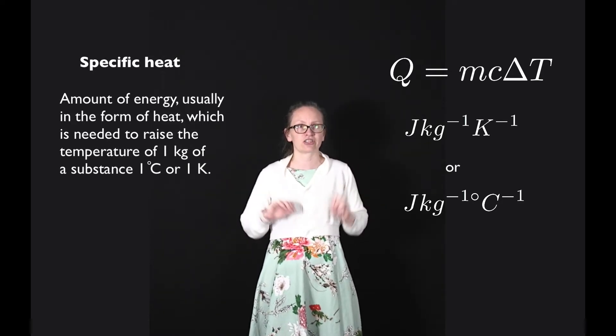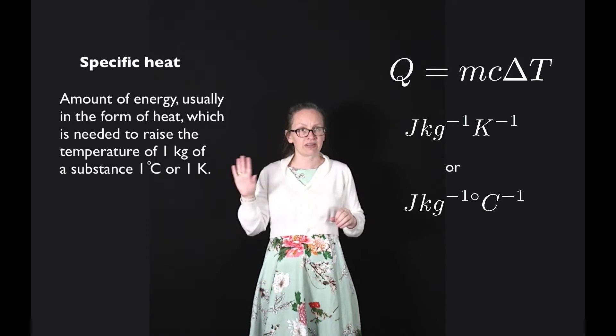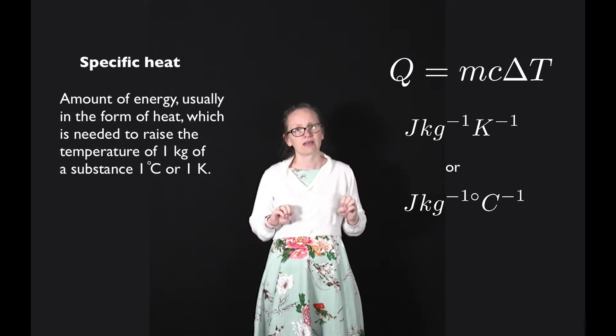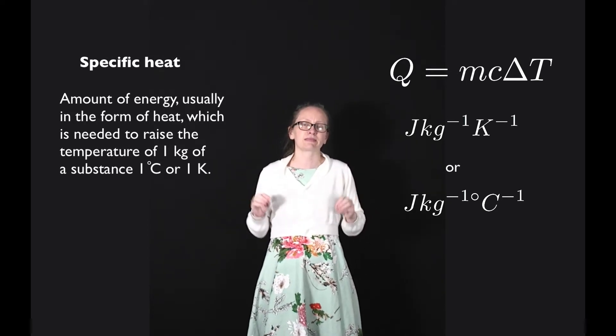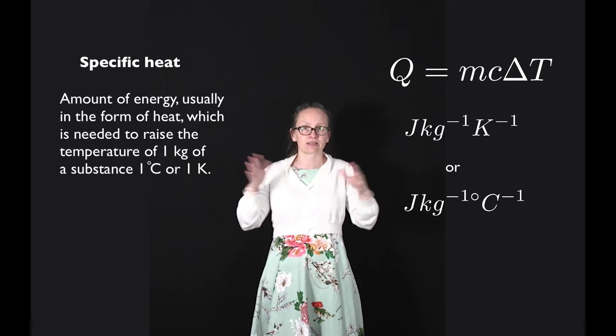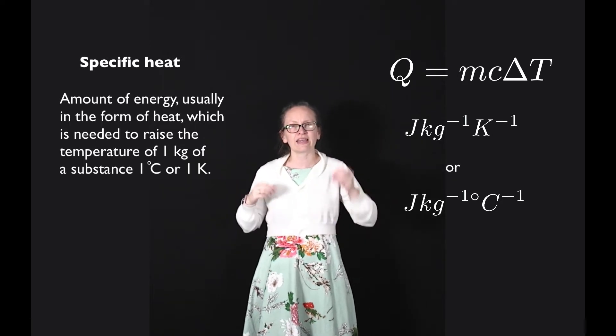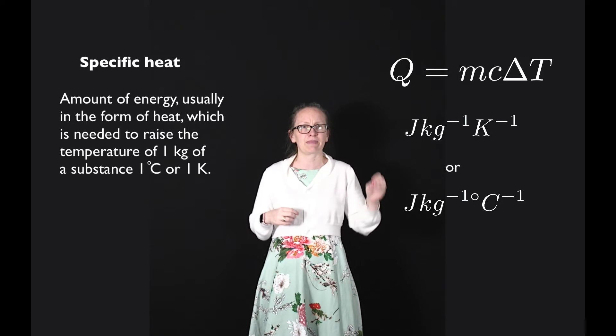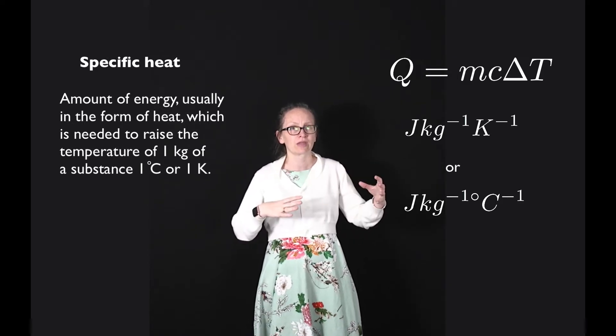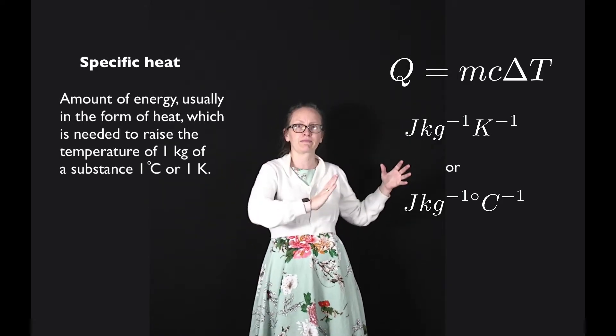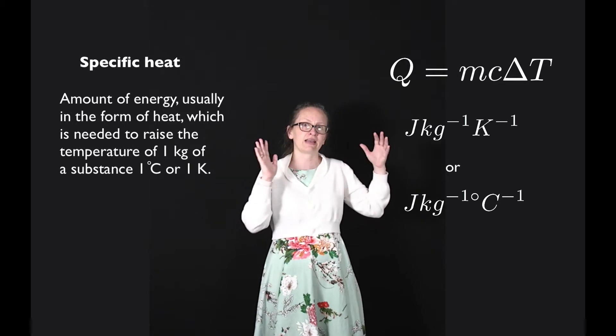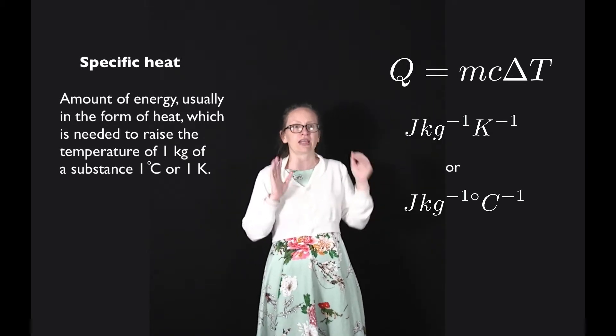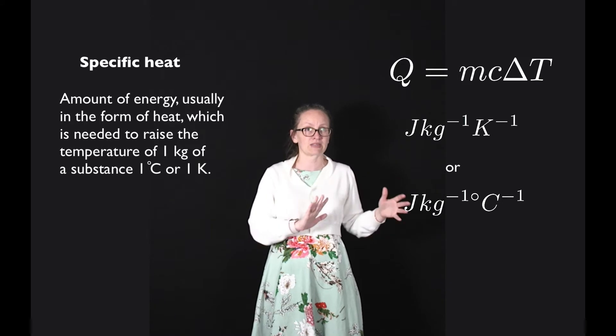Delta T is the change in temperature in either degrees C or kelvins. Now, the specific heat depends upon the substance which is involved and it can also have a slight dependence upon the temperature. Sometimes at higher temperatures we need to add in more energy to get the same change in temperature of that substance.